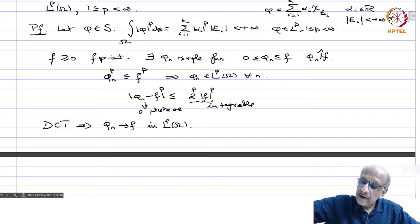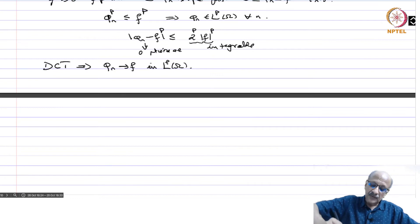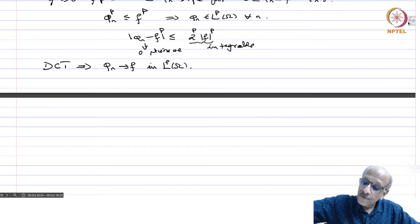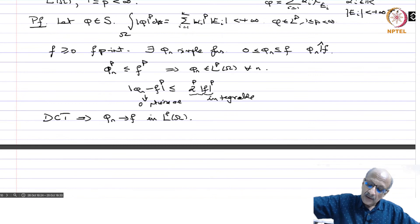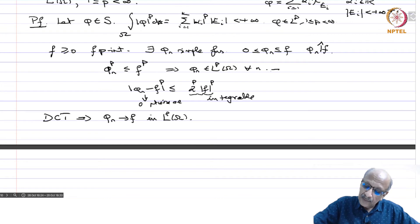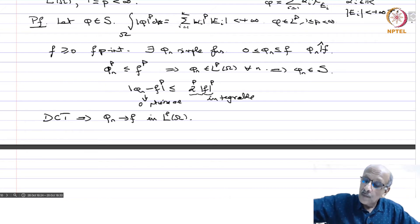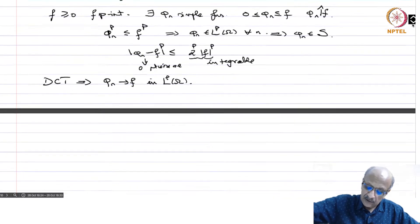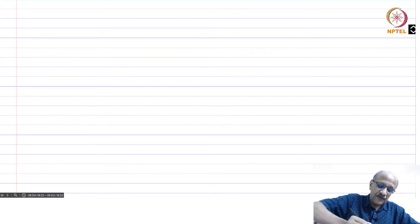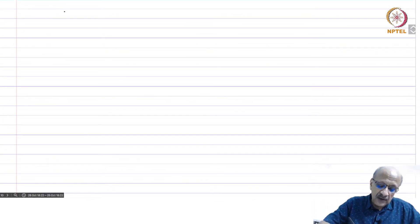Further, mod phi_n minus f is less than or equal to 2 times mod f, so putting a power p gives 2 power p times mod f power p, which is integrable. This goes to 0 pointwise almost everywhere, so by the dominated convergence theorem, phi_n converges to f in Lp. Also, since phi_n is in Lp and is a simple function, phi_n must belong to S.